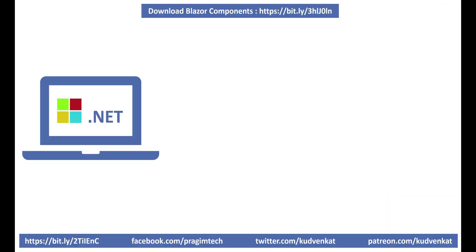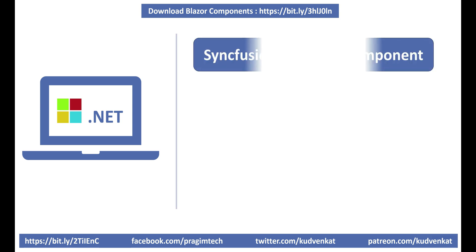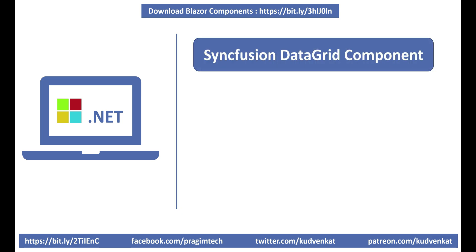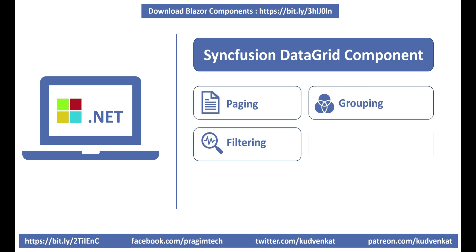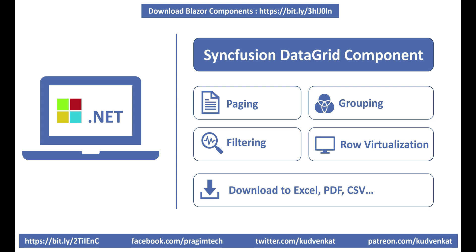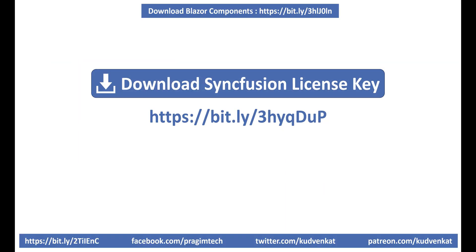If you are using Microsoft .NET to build an enterprise-class data-driven web application, you may consider using the Syncfusion DataGrid component. This component supports all these features: paging, filtering, grouping, row virtualization, download to Excel, PDF, CSV, and many more. It supports all these features both on the client side and server side, and is tested and fine-tuned to work with a huge volume of data, so performance should not be an issue. All Syncfusion components are free to use with their community license — use the link shown on the screen to download the free license, and I'll have this link available in the description box below this video.